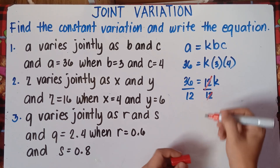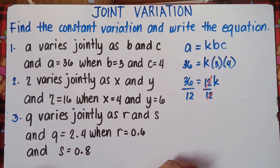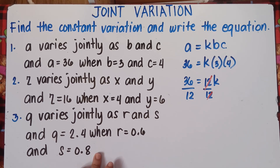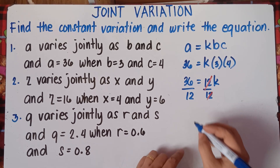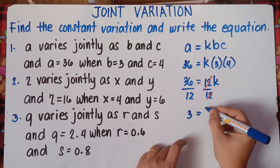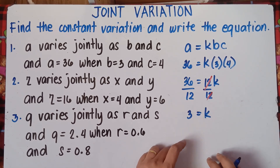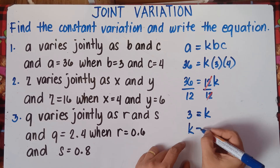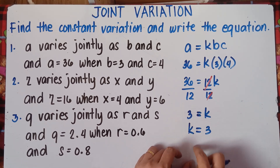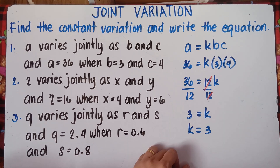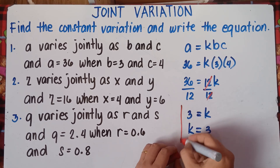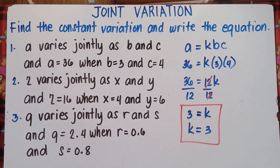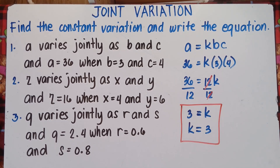And there you have it. 36 divided by 12 is 3, so K equals 3. Do not be confused — 3 equals K is just the same as K equals 3. So your K is 3.